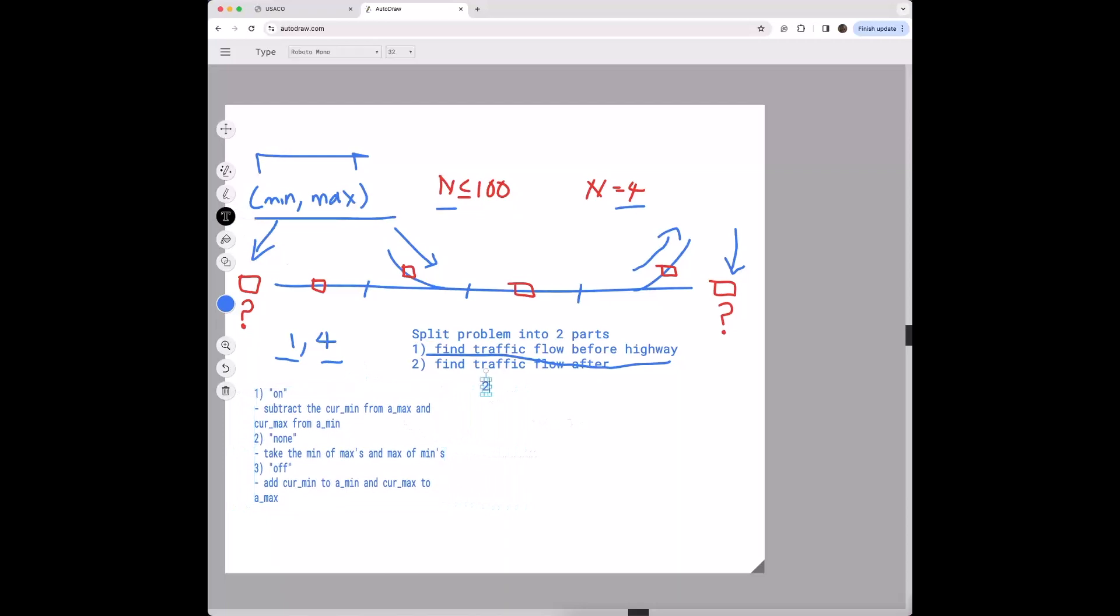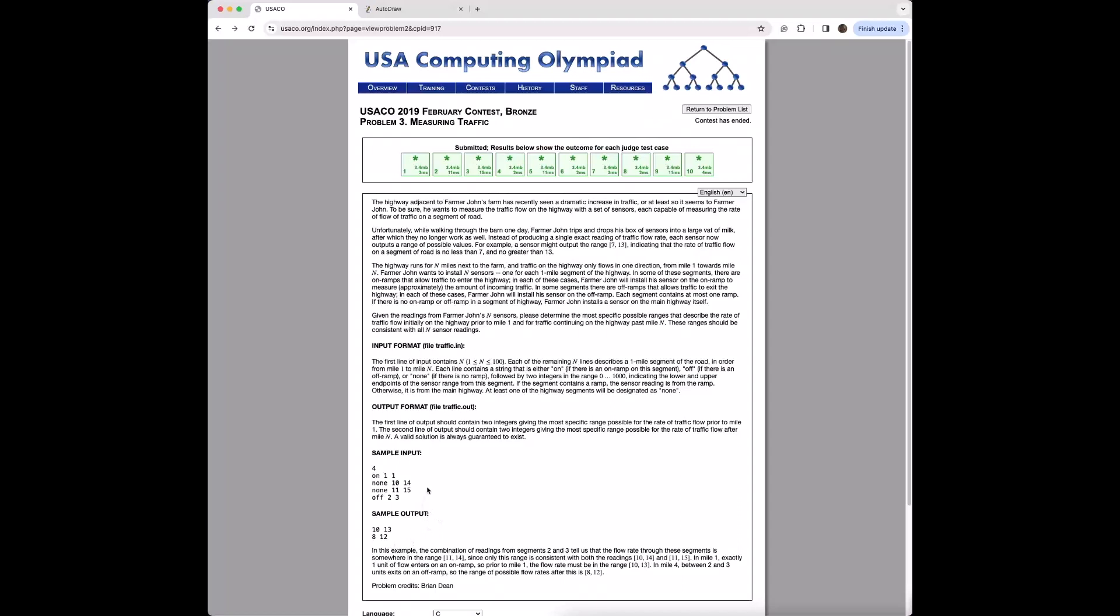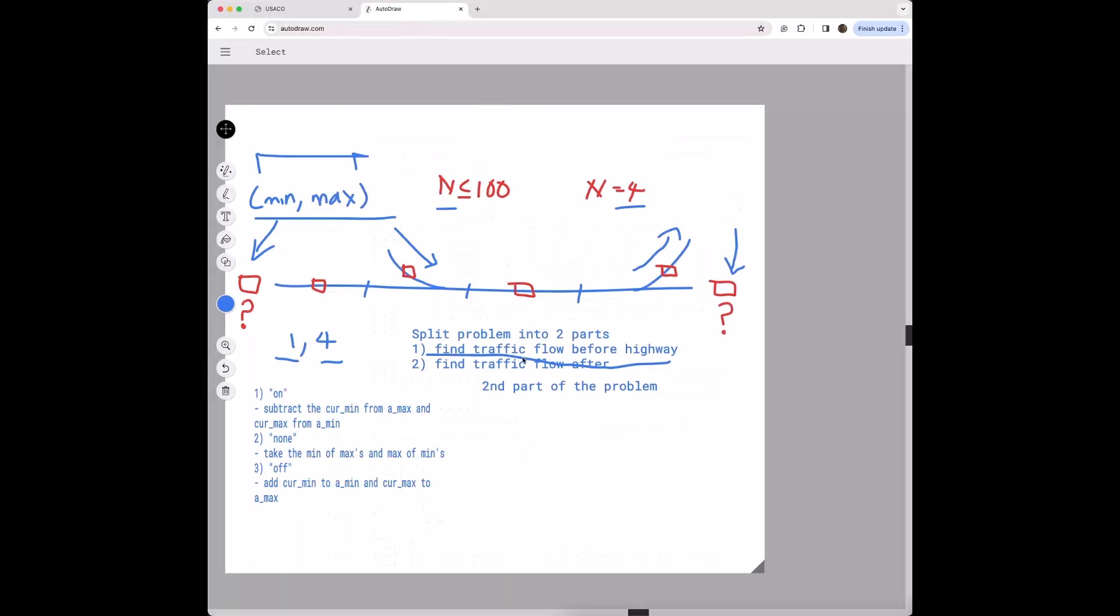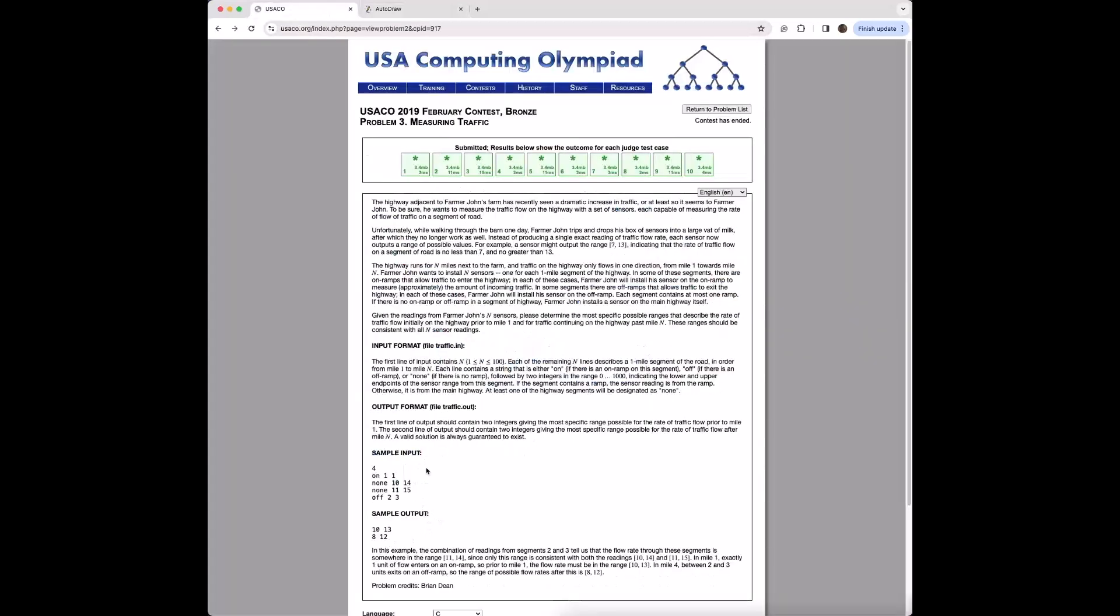So for the second part of the problem, we're going to have to face the same exact conditions, except this time instead of looping backwards, we're just going to loop forwards on the inputs. And the reason being is that whatever comes before impacts the amount of traffic flow at the end of the highway, in contrast to the previous part of the problem where whatever comes after impacts the previous part of the first part of the highway.